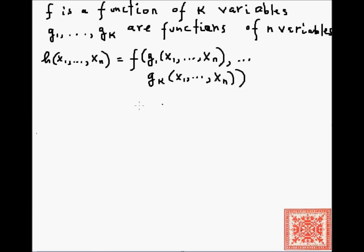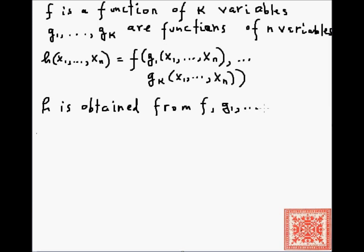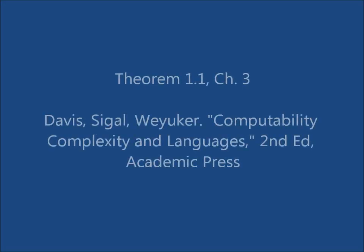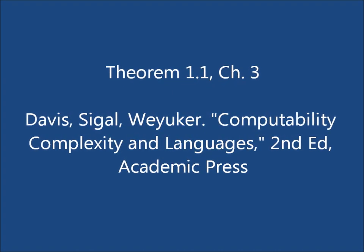If h is so obtained from f and k g's, then h is said to be obtained or constructed from f and the g's by composition. This is Theorem 1.1 from Chapter 3 in Davis, Segal, and Wacker's book, Computability, Complexity, and Languages, and it proves a very interesting property of composition.